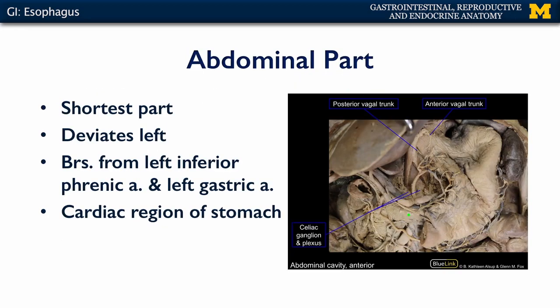The final and shortest part of the esophagus is the abdominal part. We can see it here deviating left into the stomach, and it is contiguous with the cardia, or the cardiac region, of the stomach. The anterior vagal trunk is visible here, and this abdominal part continues to receive innervation from the vagal trunks. It gets its blood flow largely from the left inferior phrenic artery, the left gastric artery, and any continuations of esophageal arteries from the thorax.